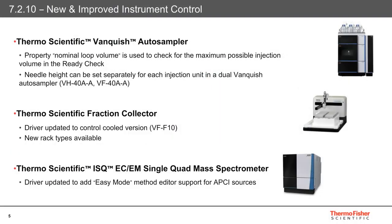Moving on to the Thermo Scientific Vanquish HPLC instrument, a new updated driver for the Vanquish Auto Sampler has been released. This introduces a new property called Nominal Loop Volume, which is used to check for the maximum possible injection volume in the Chameleon CDS Ready Check. It's also possible to set the needle height separately for each injection unit in the dual Vanquish Auto Sampler, expanding on its current application capabilities. We've also updated the VFF10 driver used to control the Thermo Scientific Fraction Collector, which now adds support for the cooling configuration, including capacity for five new associated rack types. This ensures that sample integrity is maintained for temperature sensitive and precious compounds.